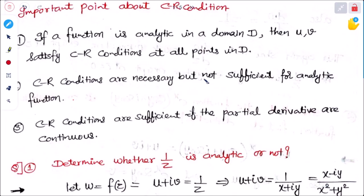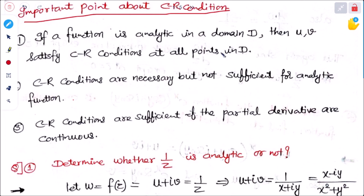In the last class we discussed the Cauchy-Riemann condition: ∂u/∂x = ∂v/∂y and ∂u/∂y = −∂v/∂x. There are some important points about the CR or Cauchy-Riemann condition. Number one: if the function is analytic in the domain D, then u and v satisfy the Cauchy-Riemann condition at all points in D.